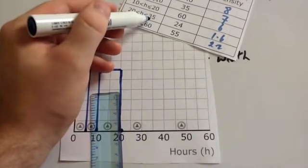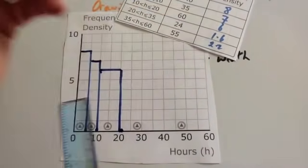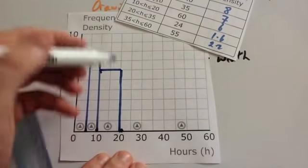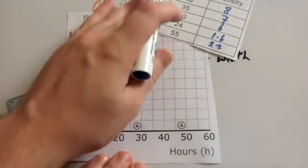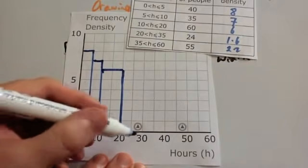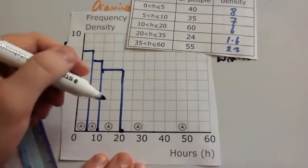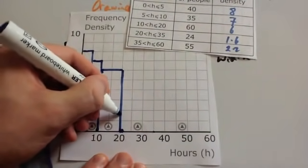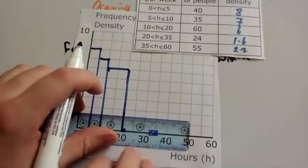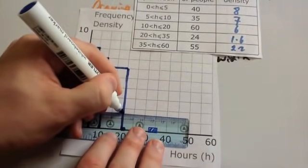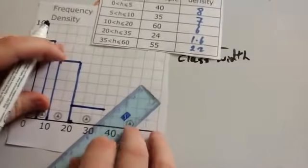Next one. 20 to 25 has a frequency density of 1.6. So 20, sorry, 20 to 35 has a frequency density of 1.6. So, 20 to 35, so here to here, has a frequency density of 1.6. So 1.6 is around about there. So you're going to go across, and there.